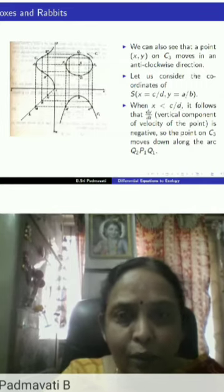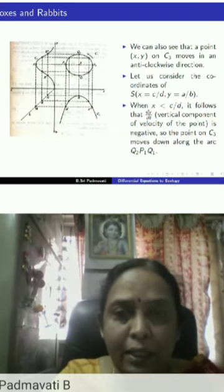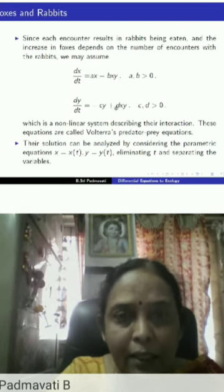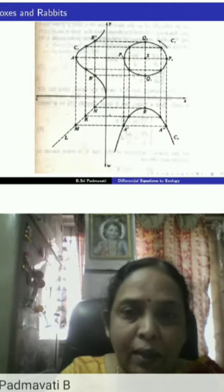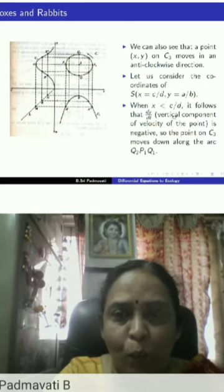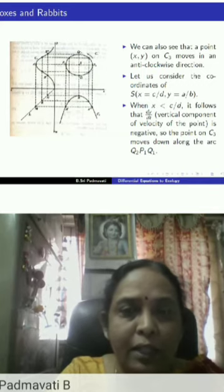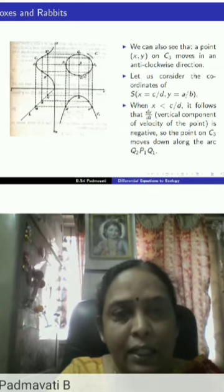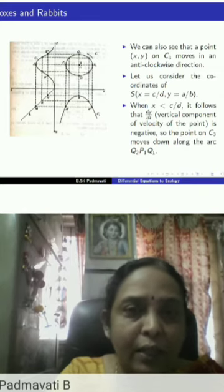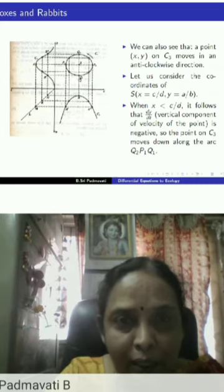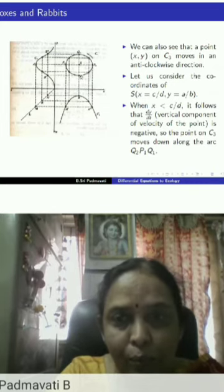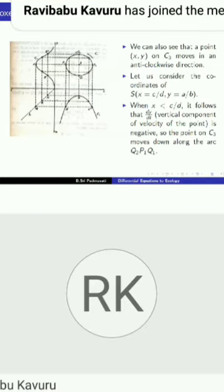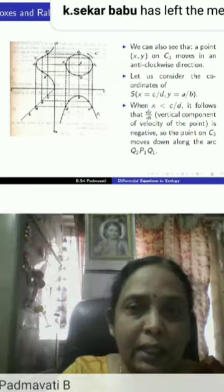When x < c/d, dy/dt is negative so y is decreasing, and the point on C3 moves along arc Q1→Q2→P1. For x > c/d, dy/dt is positive so y is increasing, and the point moves from Q2 to P2 and then to Q1. From these two cases we see that the point moves on C3 in an anticlockwise direction.